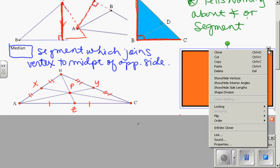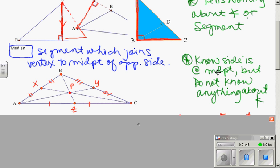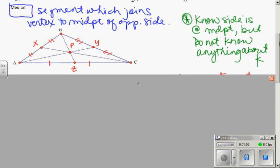When you're looking at a median, you know the side is at the midpoint, so you know you get equal segments, but you do not know anything about that vertex angle. You don't know if it's bisected, if it's cut in thirds. You know nothing. So don't assume anything.